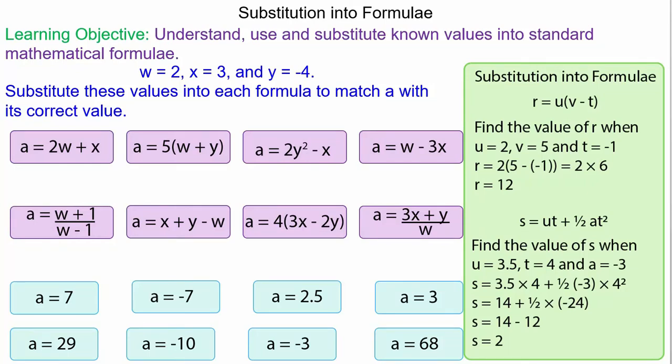In this lesson we're going to use the order of operations to substitute known values into a formula. We'll begin with 2w plus x. We've got 2 times w, and in this case w equals 2, so 2 times